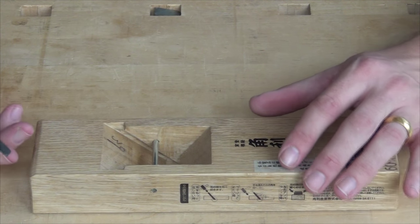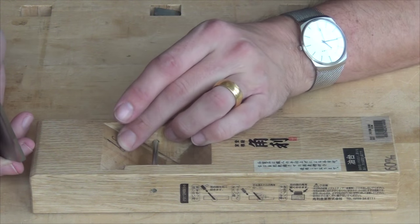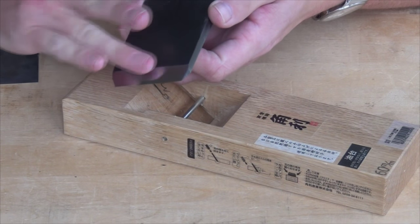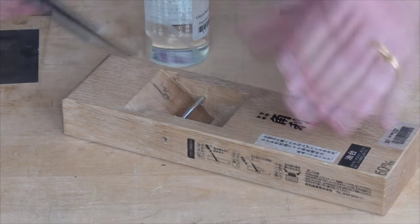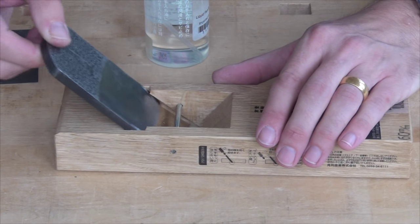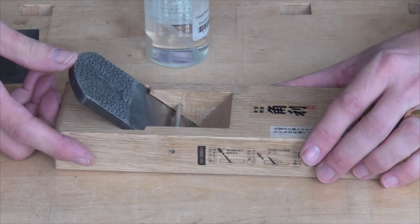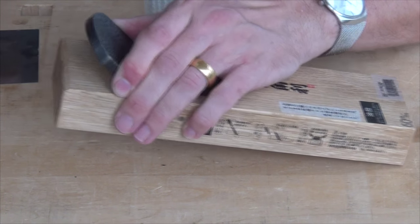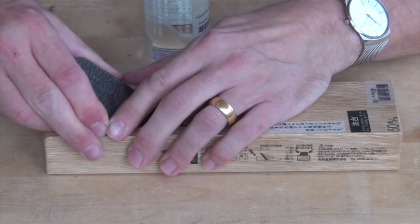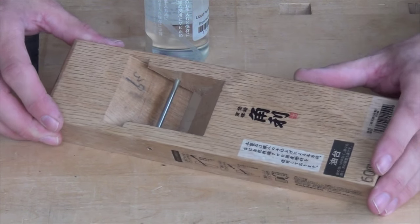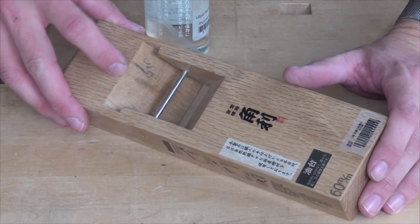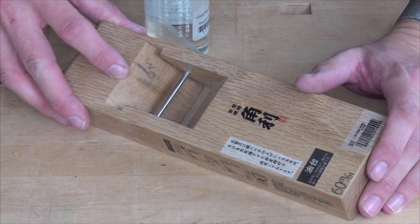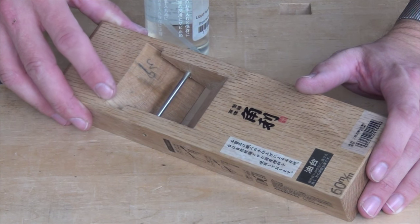So the next thing to do is to make sure that it beds properly. I'm just wiping some camellia oil on the back of the blade. Pop that in, thumb pressure. And if you look in there you can see it's transferred to actually quite a bit of the bed. So it's actually quite nicely prepared.